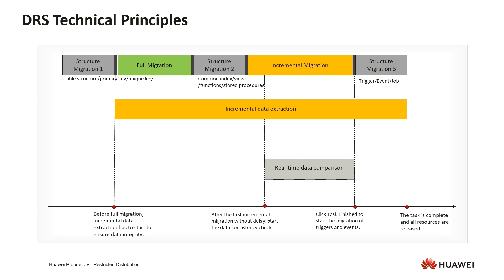Of course, we also recommend using UGO to replace this part. Additionally, we can uncheck the synchronization structure operation in the DRS settings page. The second stage is to transfer all data through the full migration stage of DRS. During this progress, data that needs to be synchronized from the source end will be extracted, so the time depends on the size of the data.